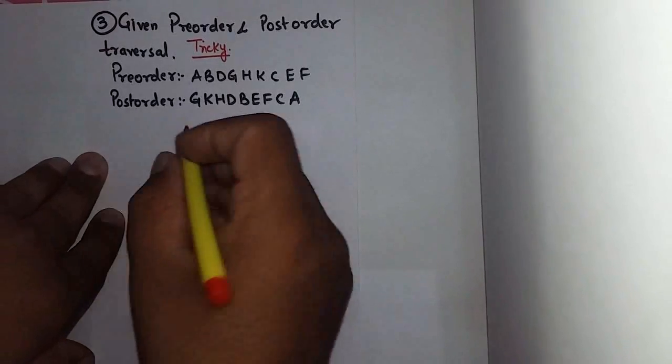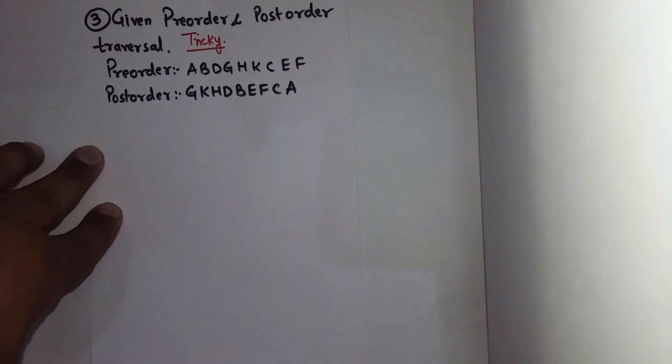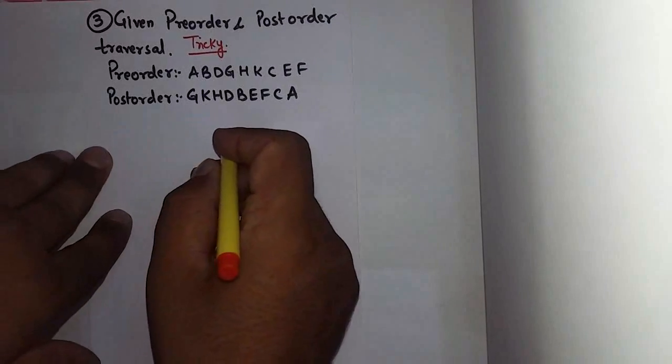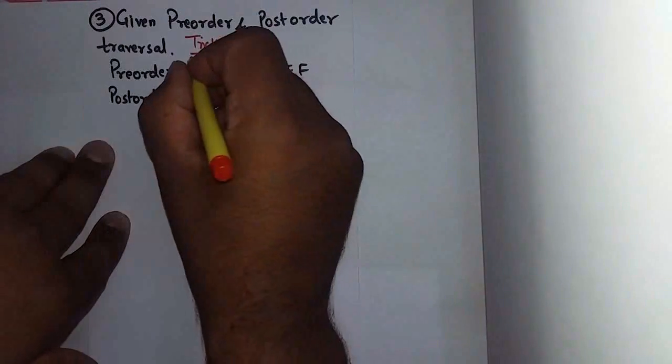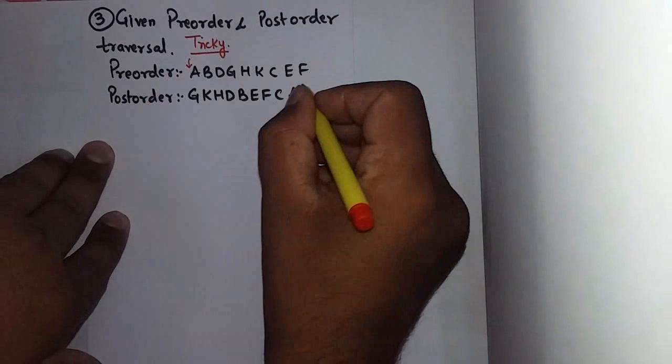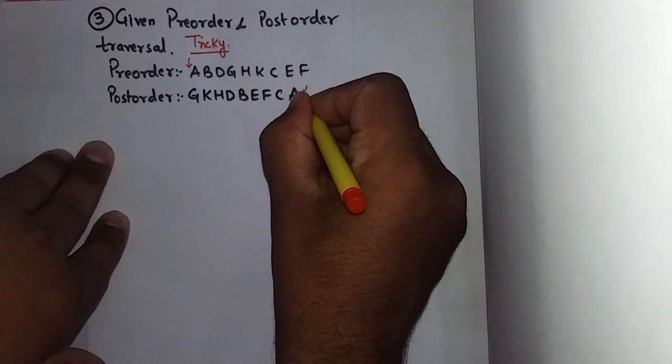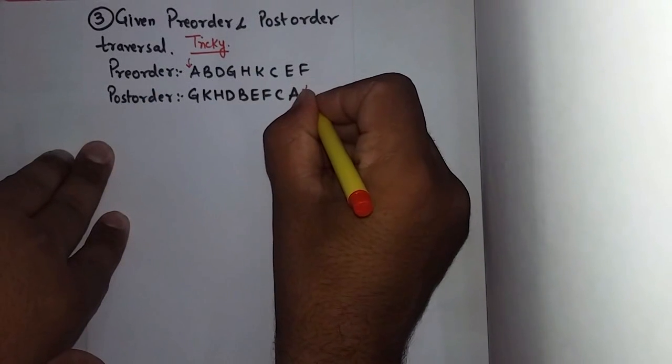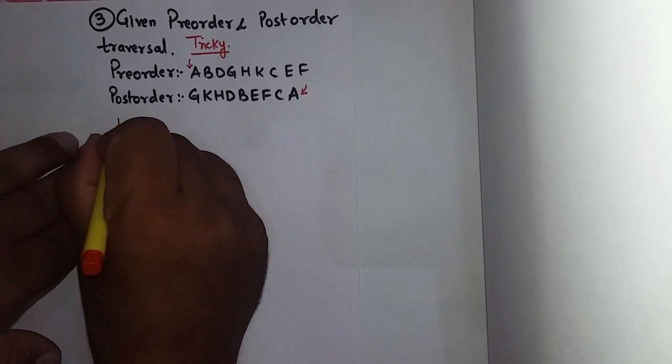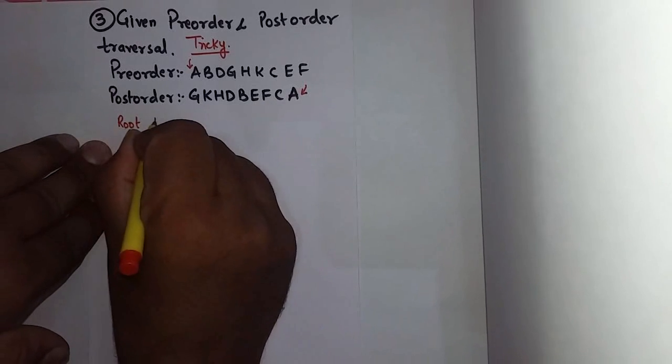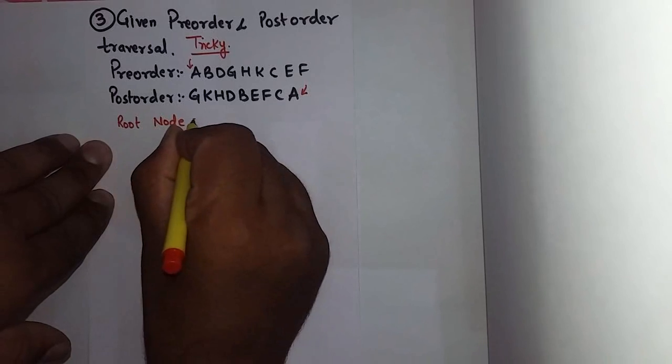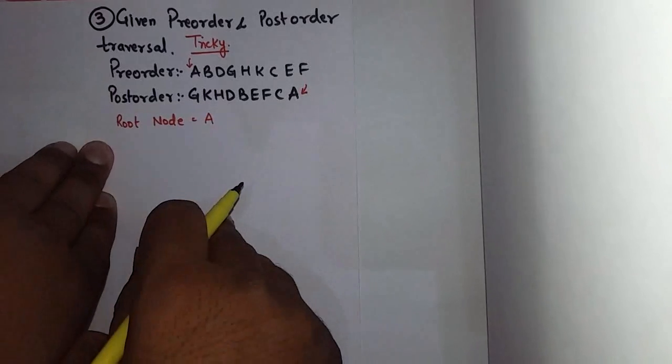What do we find out when we create binary tree? Which is the root node? Pre-order first and post-order last node. This is the root node, so my root node will be A.